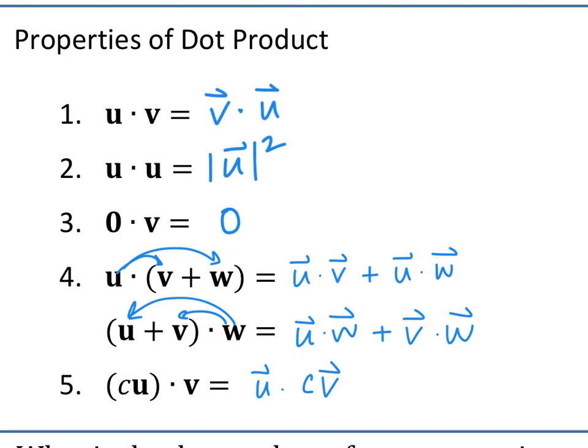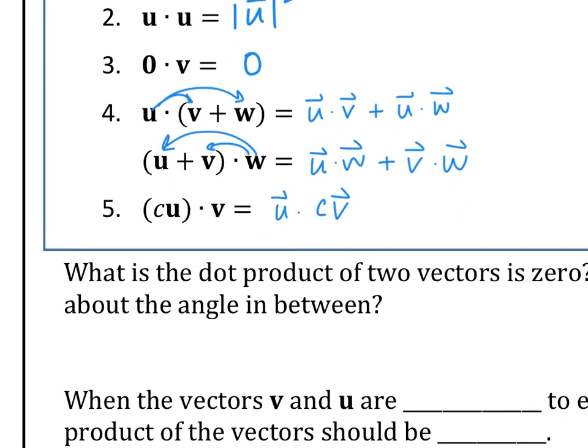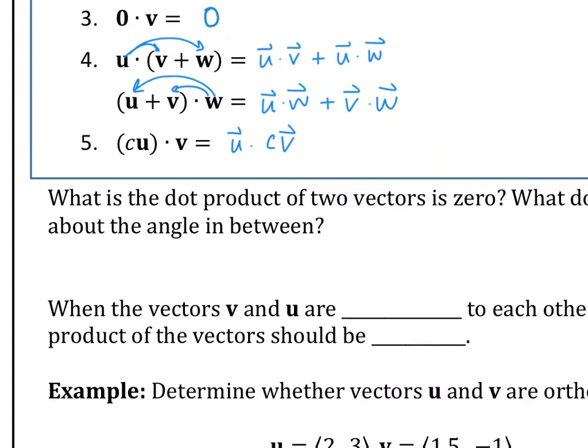So just some properties of dot product. Remember, dot product is: you multiply the two components together and then you add. A lot of you multiply together and then just left it as a vector — that's not correct. You've got to add them together. So you probably did this last night.